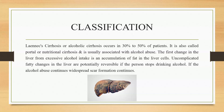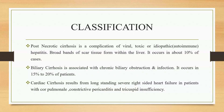Uncomplicated fatty changes in the liver are potentially reversible if the person stops drinking alcohol. If the alcohol abuse continues, widespread scar formation continues. The next type is post-necrotic cirrhosis, which is a complication of viral, toxic, idiopathic, or autoimmune hepatitis.